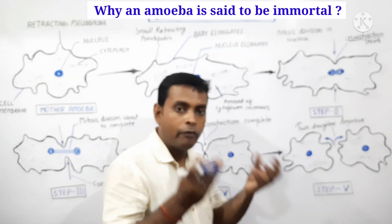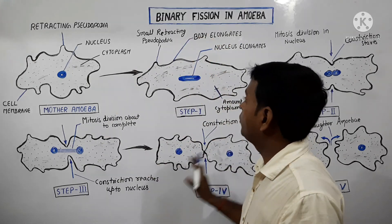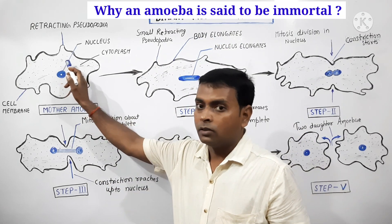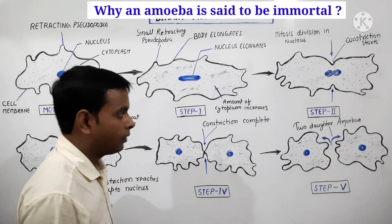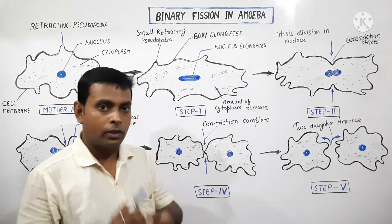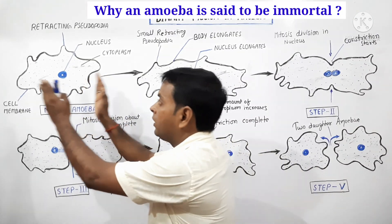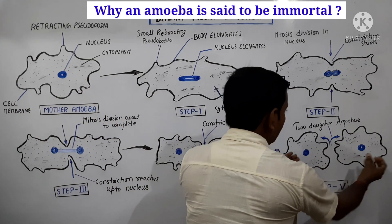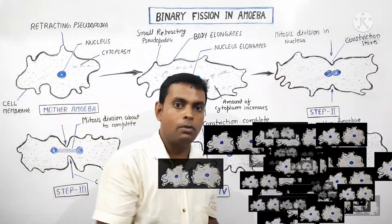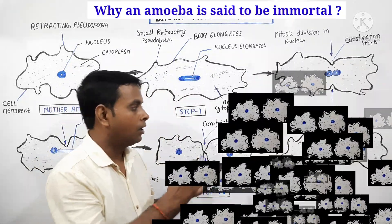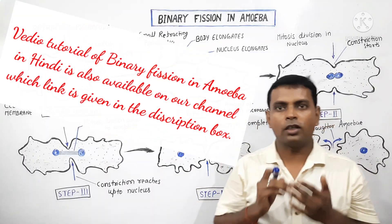If we compare and observe the whole process of binary fission, the mother cell divides to form two daughter amoebas. If we look carefully, the mother amoeba never dies — it only divides to form two new daughter cells. So this amoeba, or any amoeba, is said to be immortal.